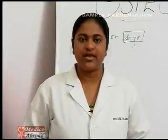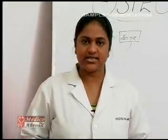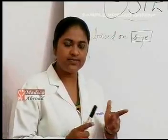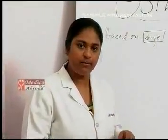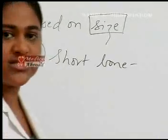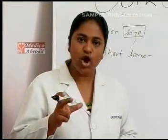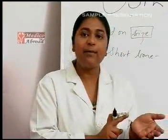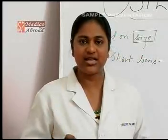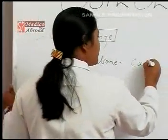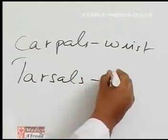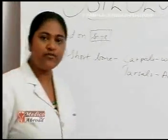Let's now classify the bones. There are different types of bones, first classified based on size. Based on size, you can classify bones as short bones, long bones, flat bones, and sesamoid bones. Short bones are small or short in length. Examples include carpal bones (bones of the wrist joint) and tarsal bones (bones of the ankle joint).